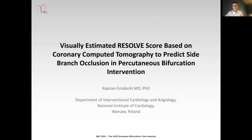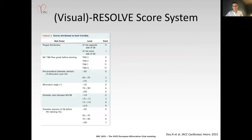Dear Chairman, thank you for the invitation to present at EBC 2021 meeting. The title of my presentation is Visually Estimated Resolve Score Based on Computed Tomography to Predict Side-Branch Occlusion in Percutaneous Bifurcation Intervention. Bifurcation lesions account for 15–20% of all percutaneous coronary interventions, and side-branch occlusion remains a major procedural complication. To predict the probability of side-branch occlusion after main vessel stenting, the Resolve Score was designed for evaluation of invasive coronary angiograms.